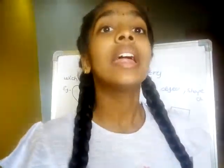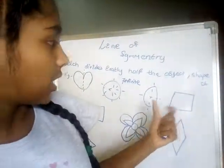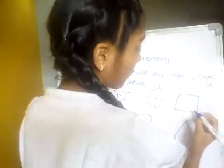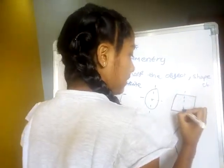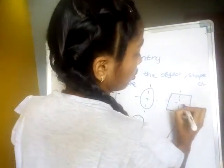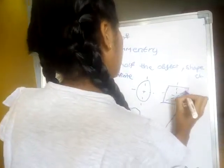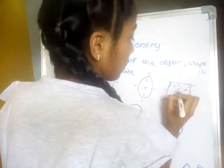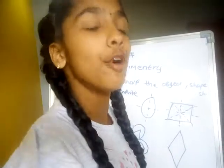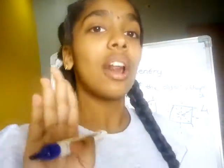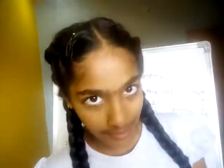Now our next shape is a square. What will we see for a square? A square has four lines of symmetry — one, two, three, four. It has four lines of symmetry.